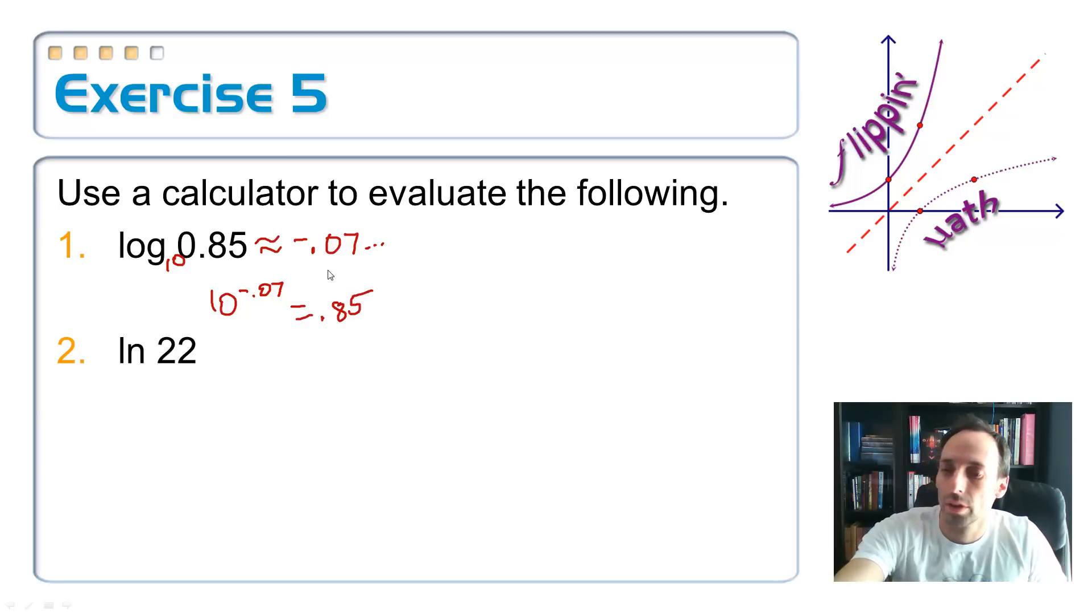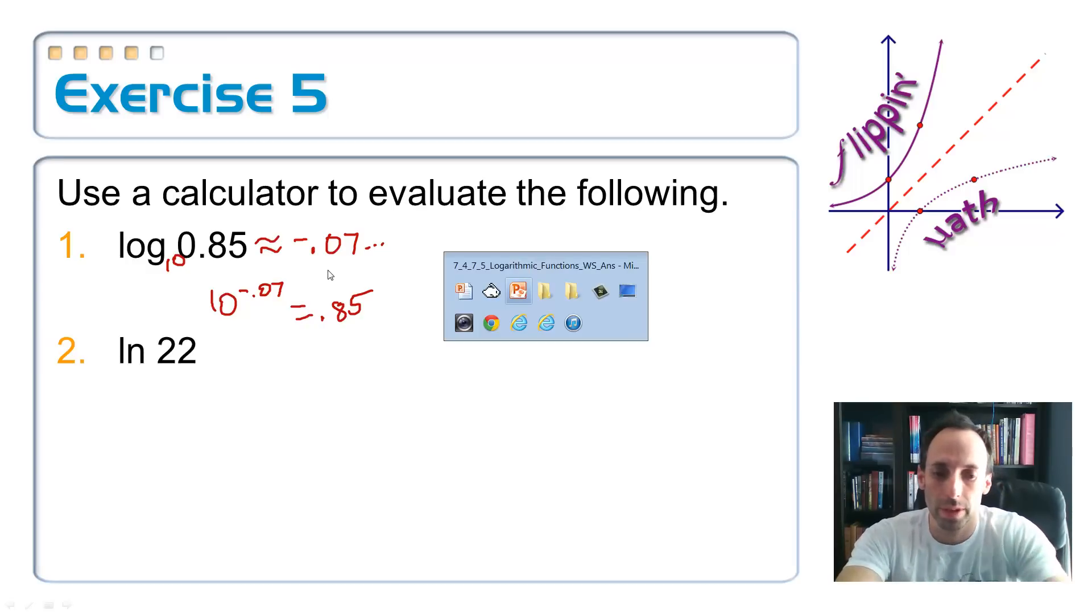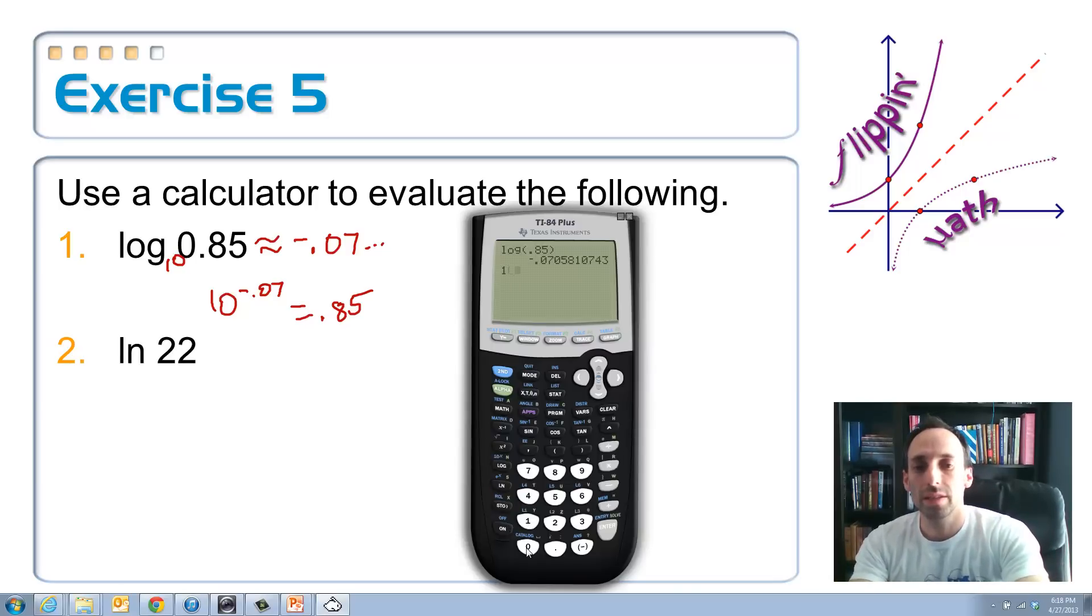Let me show you that in the calculator. Remember, the answer to a logarithm is an exponent, so I'll show you. So calling up the calculator again, type in 10, because that's the base, the little caret key, and instead of typing that all in again, hit second answer. What number should I get as my answer? I should get 0.85, and I do.